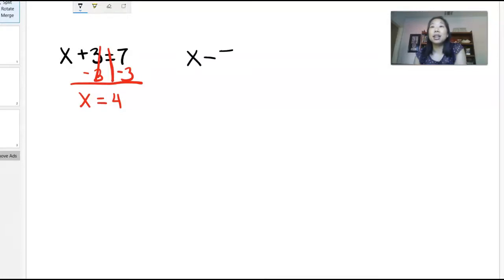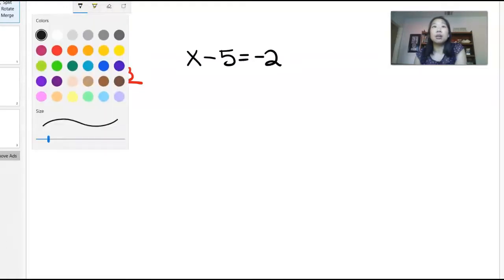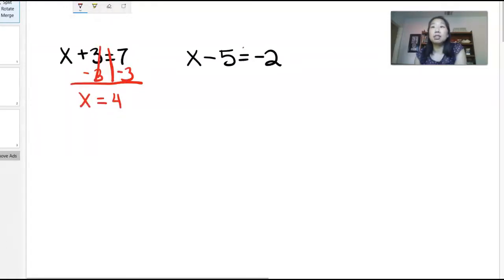Now if I had x - 5 = -2, again we're going to draw our upside down T through our equal sign, and remember whatever you do to one side of the mirror you must do to the other. So the opposite of negative 5 is positive 5, and I have to do it to both sides of my mirror. These zero out, so I am left with x = -2 + 5 which is 3.